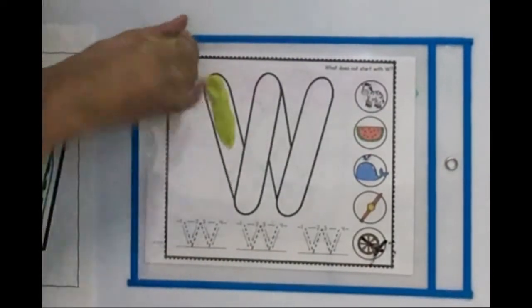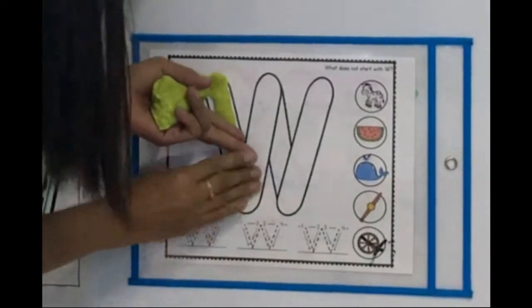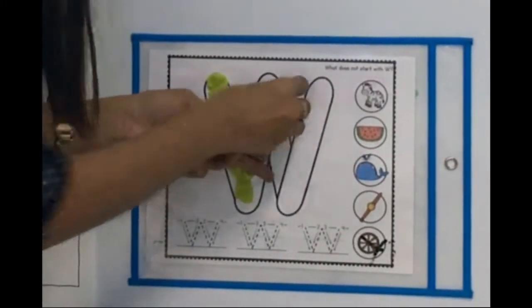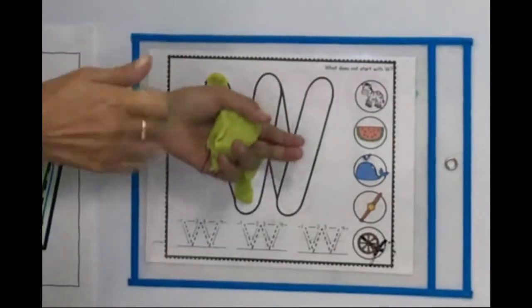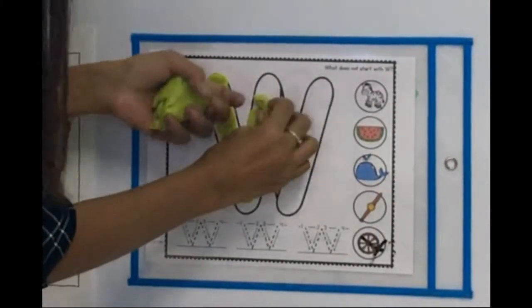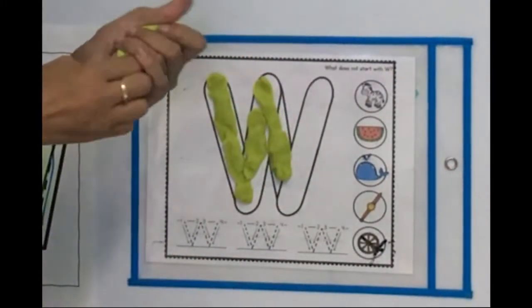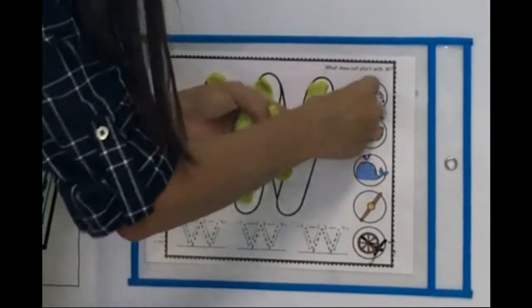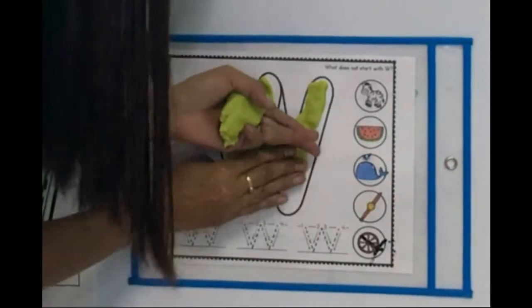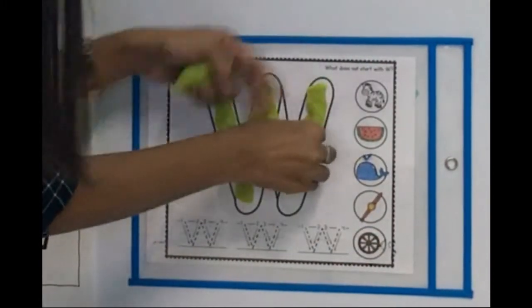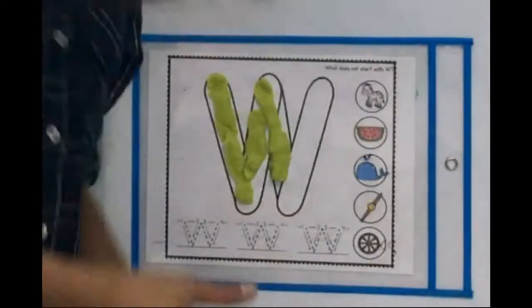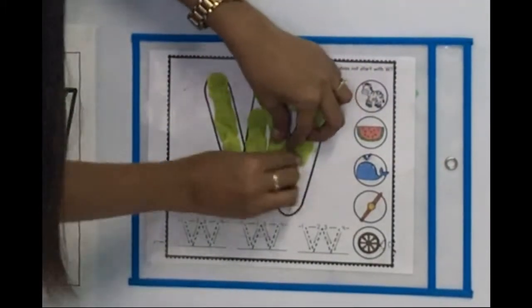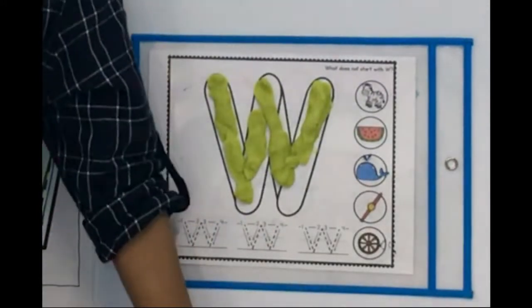Stick it on your play-doh mat. Then you're going to do that, and then you're going to do that again, rounding each of those. And then we have the letter W!